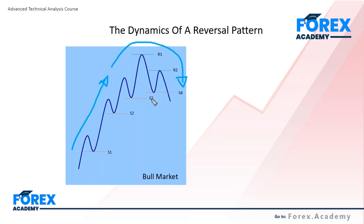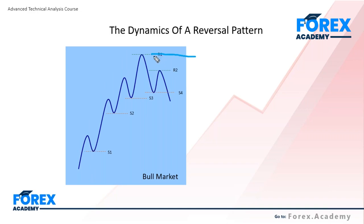We then subsequently have a recovery in price action, and the observation that we need to make once the market is recovering is whether this recovery in price action will actually travel beyond the point marked R1 — in other words, will it generate a new trend high? If it does, then it just maintains the sequence of higher highs and higher lows and the uptrend remains intact. Our observation, though, by following price action, is that we see the market stall at R2 — it's unable to continue to move higher, and then prices start to sell off.